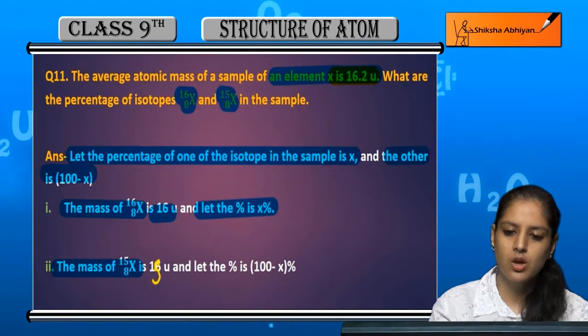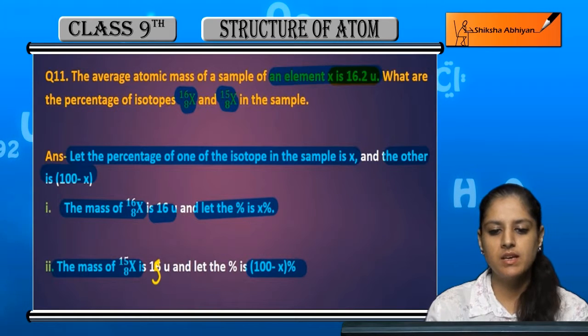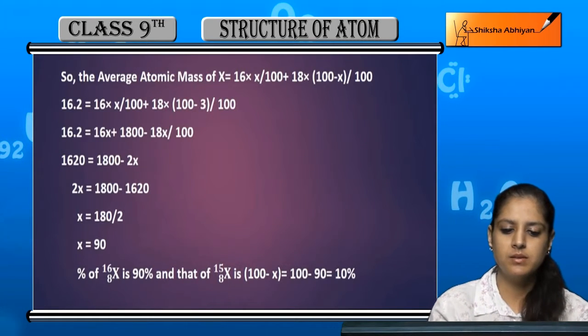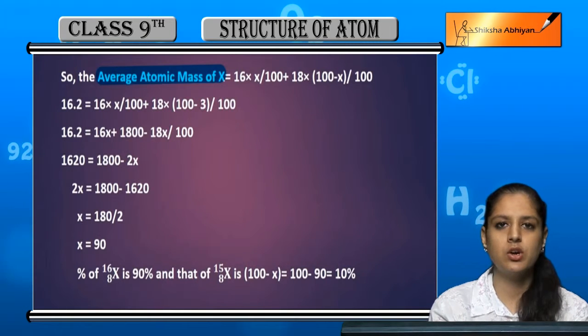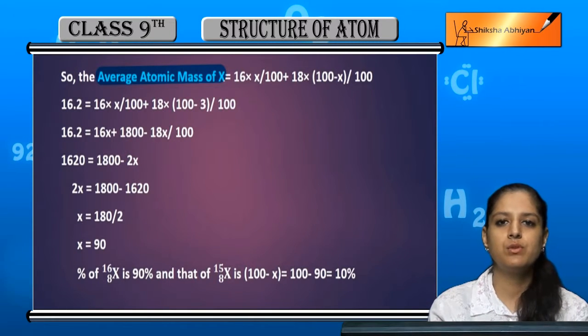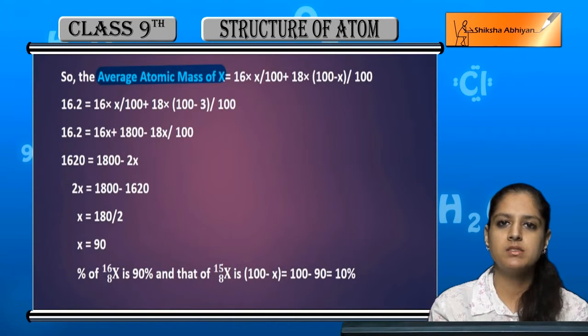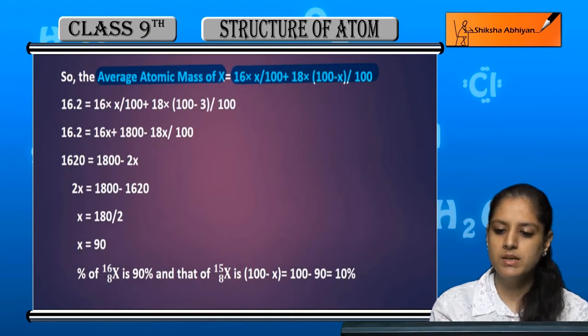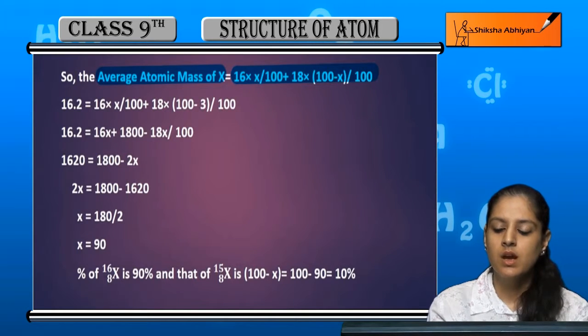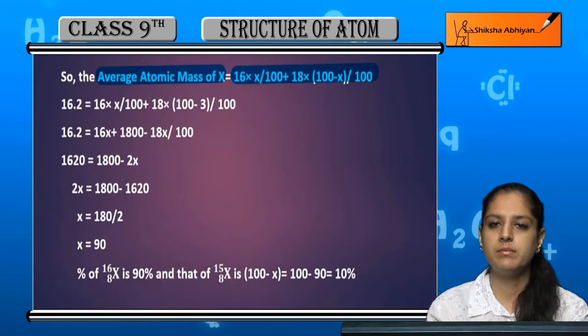The percentage that we know is 100 minus x. The average atomic mass is already given. So the average atomic mass equals 16 multiplied by x upon 100 plus 18 multiplied by 100 minus x whole divided by 100.